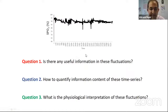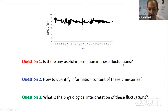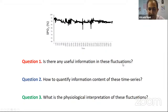We can ask ourselves three important questions. First, if we look at SpO2 variations in a patient in our emergency department, is there any useful information there, or are we talking about just random fluctuations? Second, if there is information there, how can we quantify it? Third, if we have a method to quantify these fluctuations, how can we interpret them — what is the physiology behind it? Answering these questions requires an interdisciplinary approach, involving clinicians, physicists, mathematicians, engineers, and physiologists.